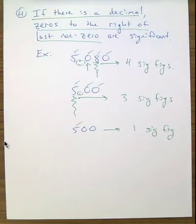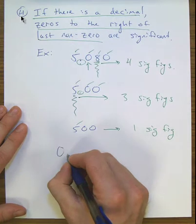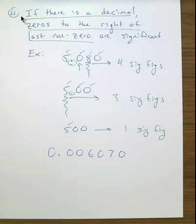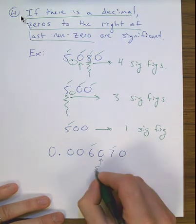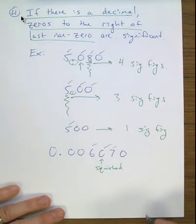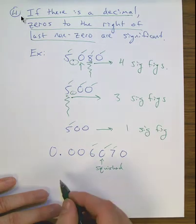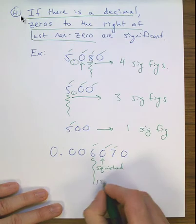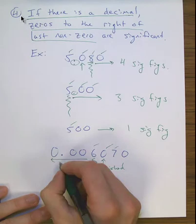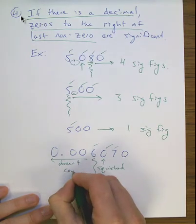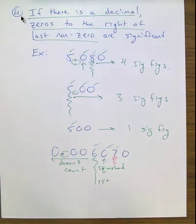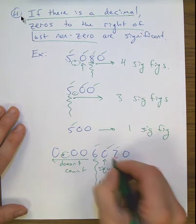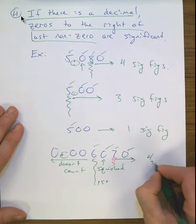Let's apply all four rules to 0.006070. The 6 and 7 are non-zeros — significant by rule one. The zero between them is squished, so it counts. Rule three: the zeros to the left of the first non-zero — the 6 — don't count. Rule four: there's a decimal, so the zero to the right of the last non-zero (the 7) counts. Total: four sig figs.